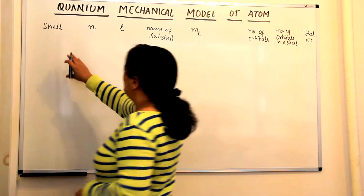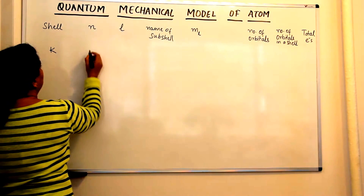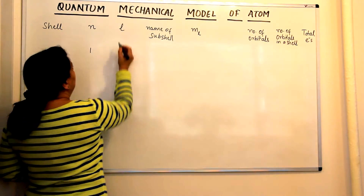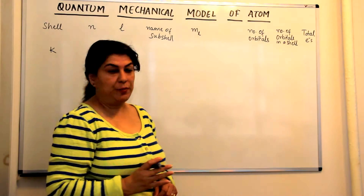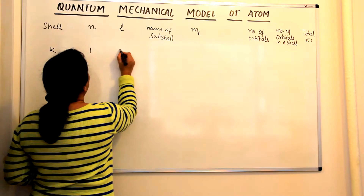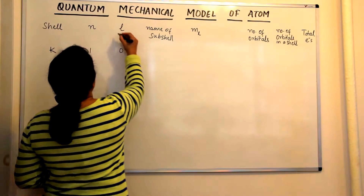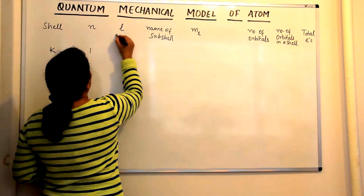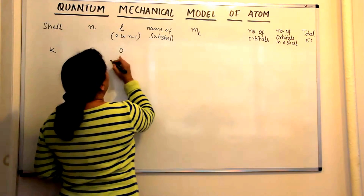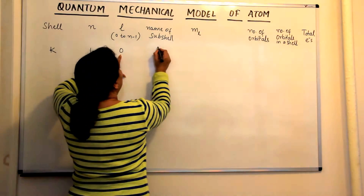Let us take the shells. The first shell is known as the K shell. The quantum number N, that is the principal quantum number for the K shell, is 1. L, that is the second quantum number, the azimuthal quantum number, for N equal to 1 would be 0. There would be only one value and that would be 0, because the value of L is from 0 to N minus 1. If the value of L is 0, then the name of that subshell is S.